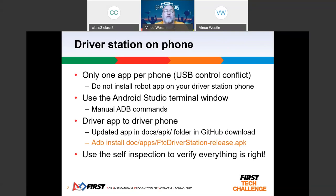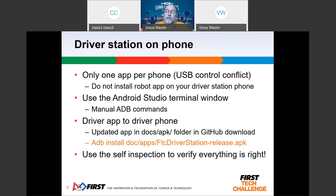You can use the Android Studio terminal window to do the commands. If you look under doc/APK in your GitHub download, you'll see the release. The actual command is: `adb install doc/app/FTCDriverStationRelease.apk`. That will install that APK on your phone — driver station didn't have to go anywhere to look for anything. That's all covered in the documentation. Once installed, you can run self-inspection to ensure the phone is set up correctly. If the short version works for you, great; if not, go read the longer documents.